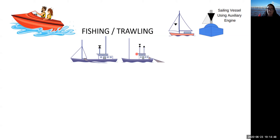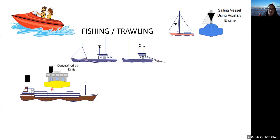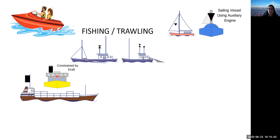That's our fishing and trawling day shapes. Next we look at constrained by draft. These are likely to be large vessels coming into a port where they are constrained by their draft in a particular channel and not able to move out of that channel. The day shape is a black cylinder. One way I remember it: a cylindrical can of Guinness is black — draft Guinness. So if a vessel has a black cylinder hoisted in its rigging, it's constrained by its draft.